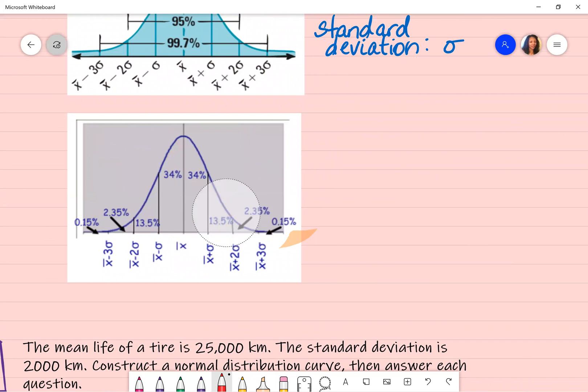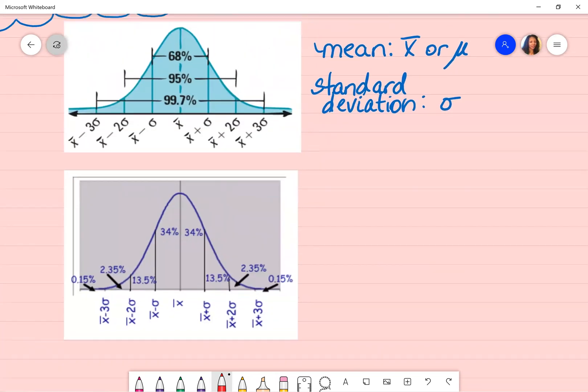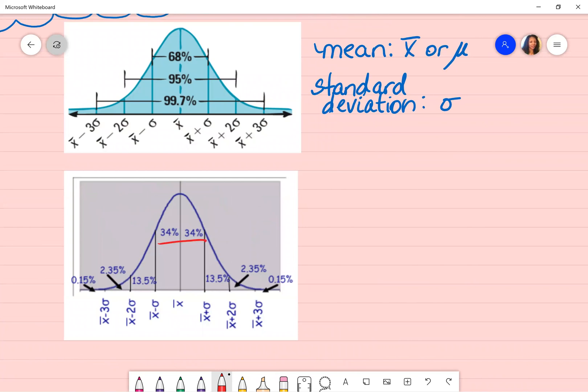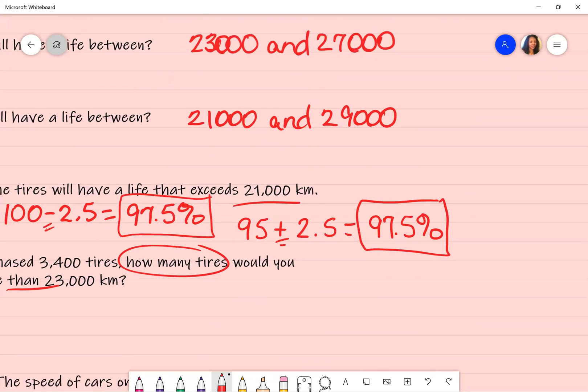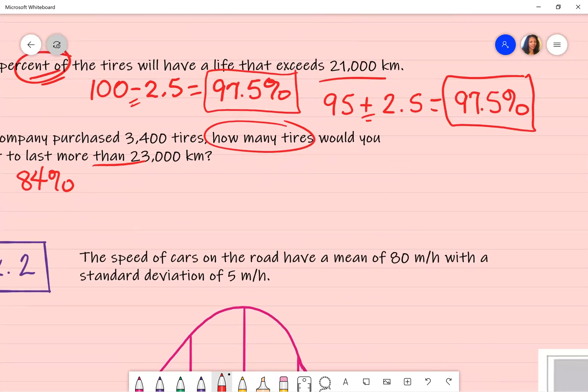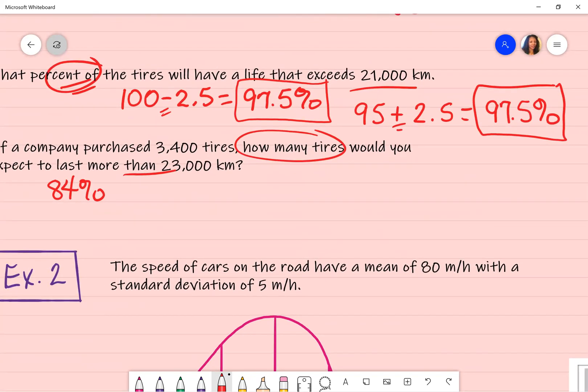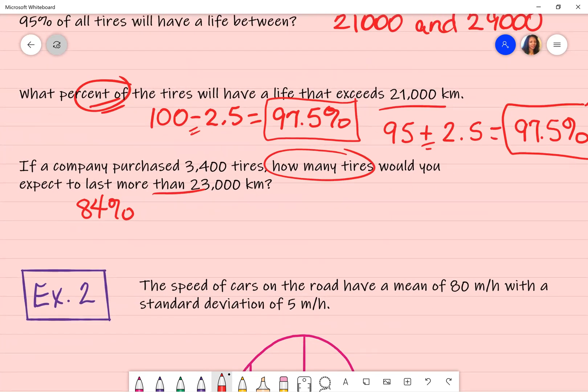So we already know that this part is 2.5. So 2.5 plus 13.5 is 16%. So we know that 100 minus 16% is 84%. Let's go back for those people that want to add. And again, don't make it hard. So instead of saying 34 plus 34, blah, blah, blah, we already know that 34 plus 34 is 68. So 68 plus 16 will also give you 84%. But we're not looking for 84%. So that was just to show you how to do the math, but that part is not really needed right now.